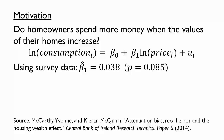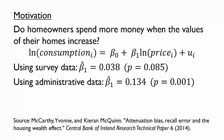What happens when we switch to administrative data on house prices? The estimated beta 1 becomes 0.134. Although this estimate is still smaller than some other studies using different data or different methods, the estimated effect is now 3.5 times as large simply by using administrative data instead of survey data, and the small p-value indicates high confidence in a relationship.